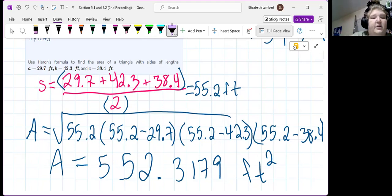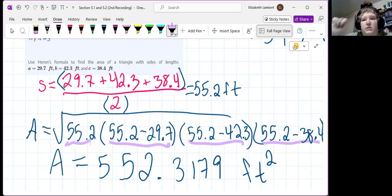Let me use a little highlighter. That's feet. This difference is feet. This one is feet. And this one is feet. So, that is feet multiplied four times. So, that is feet to the fourth, or feet squared squared, and then we square root it. So, we do end up with square feet.